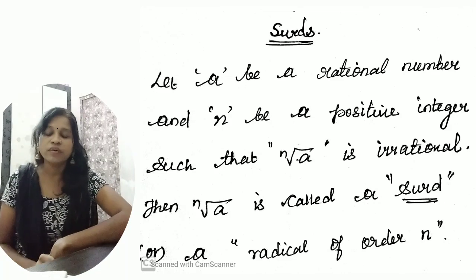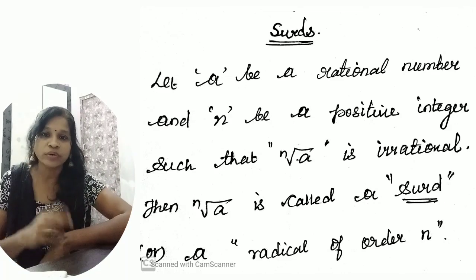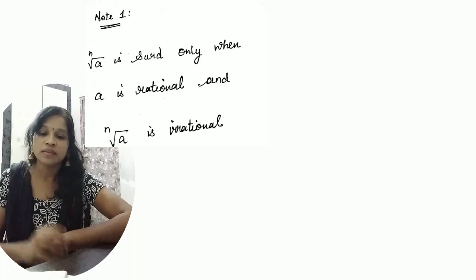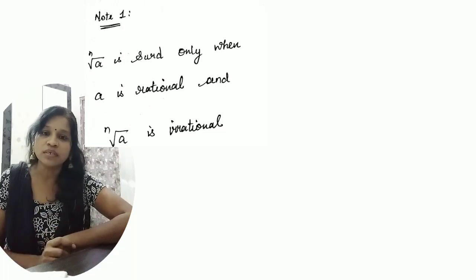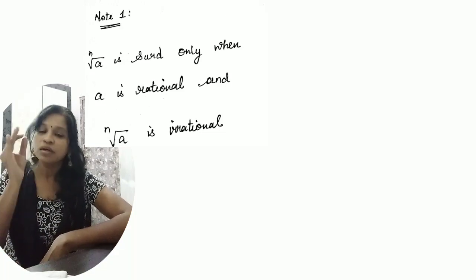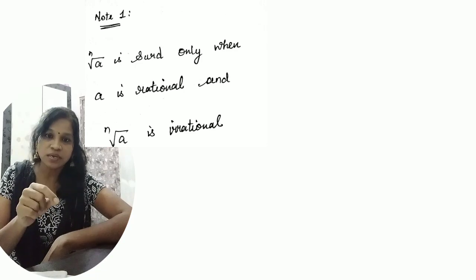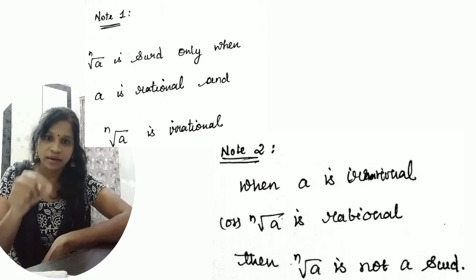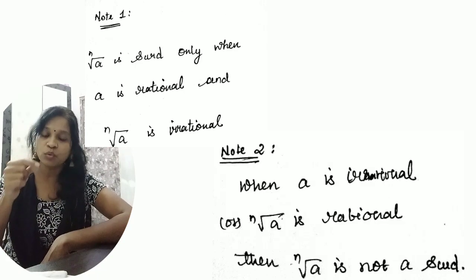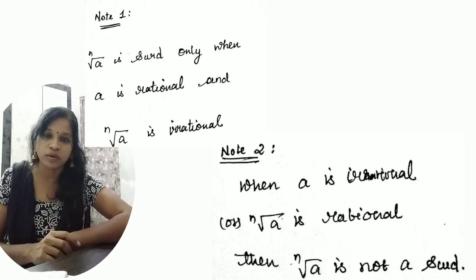Here we want to see two important notes. The first note is: nth root of a is a surd when a is a rational number and nth root of a is irrational. That is the first point.